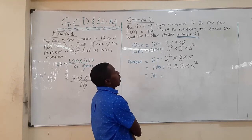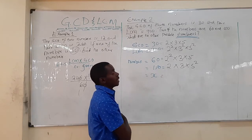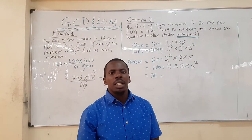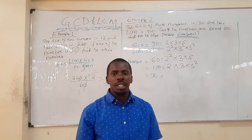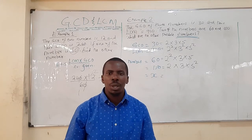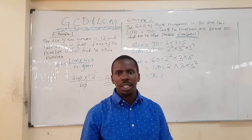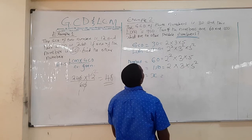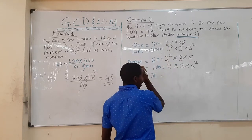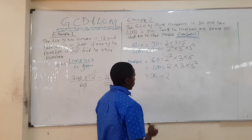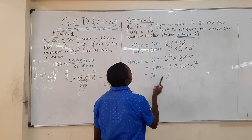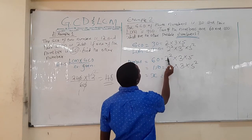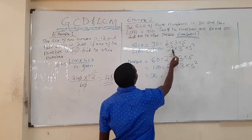For the GCD to be 30, the factor 2 must appear in all three numbers, including X. Looking at the LCM, the highest power of 2 is 2². Our given numbers have 2² and 2¹ respectively. So X can either have 2¹ or 2².